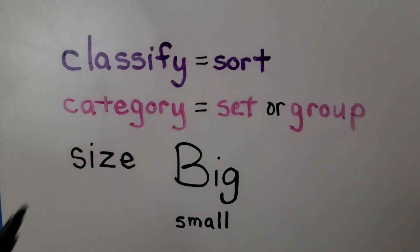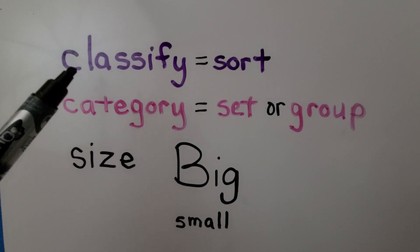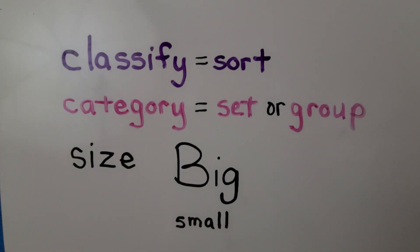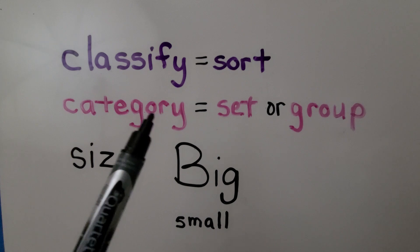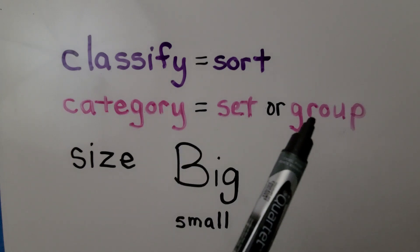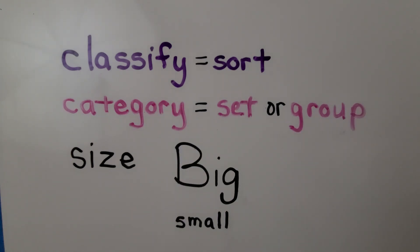So remember, when we classify objects, we sort them. We sort them into a category. A category is a set or a group. And we can sort them into categories by their size, big or small.